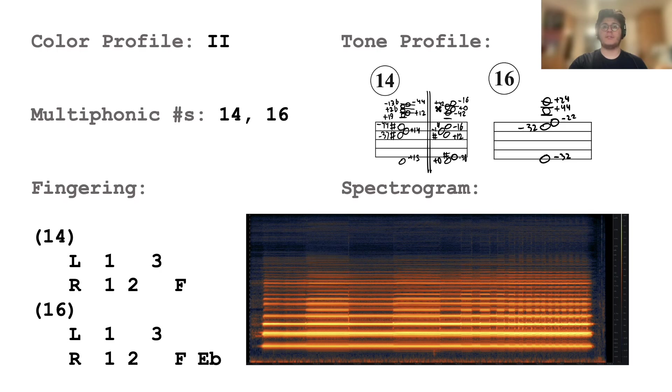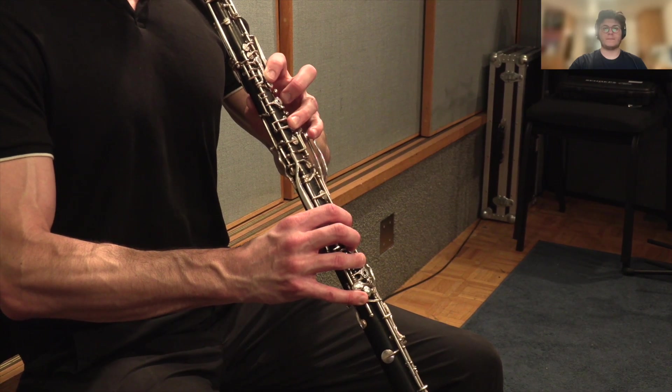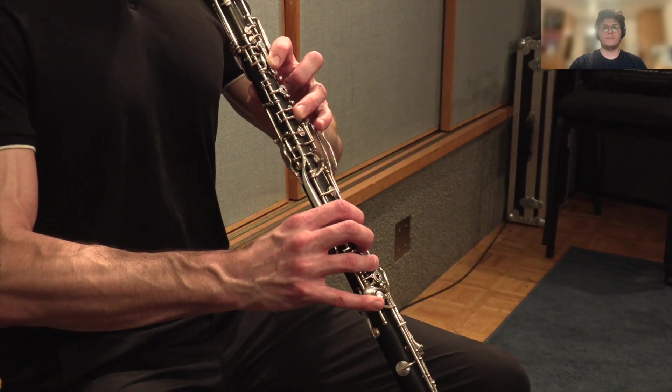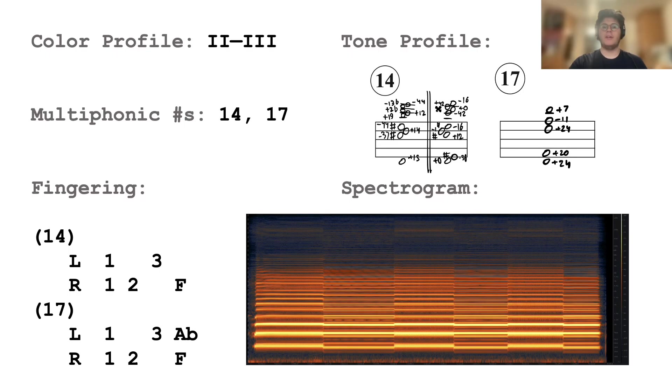For this multiphonic, the performer will toggle the E-flat key. Now we begin moving into color profile three with a pair of transitions from profile two. The performer described multiphonic 17 as very easy.